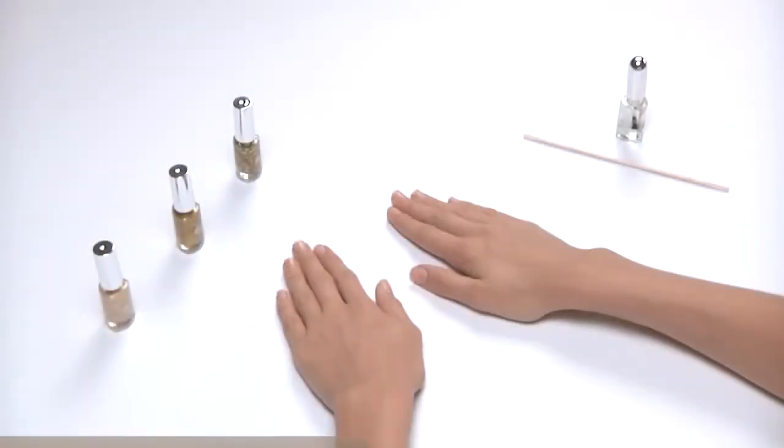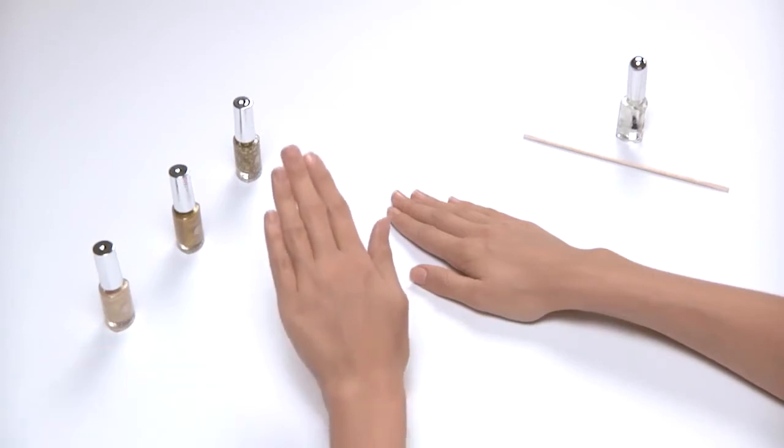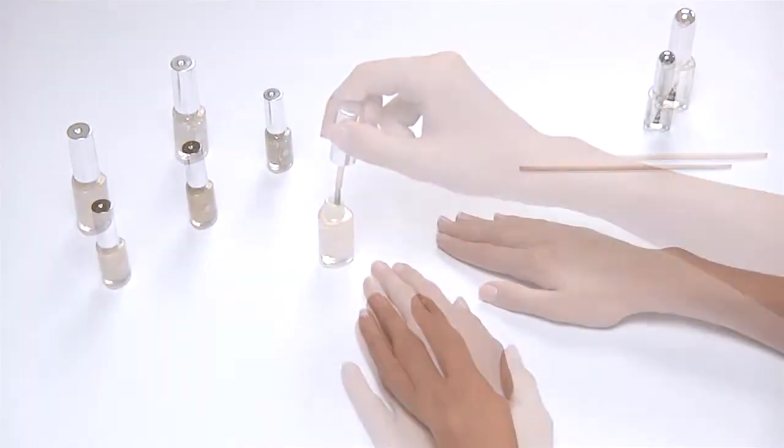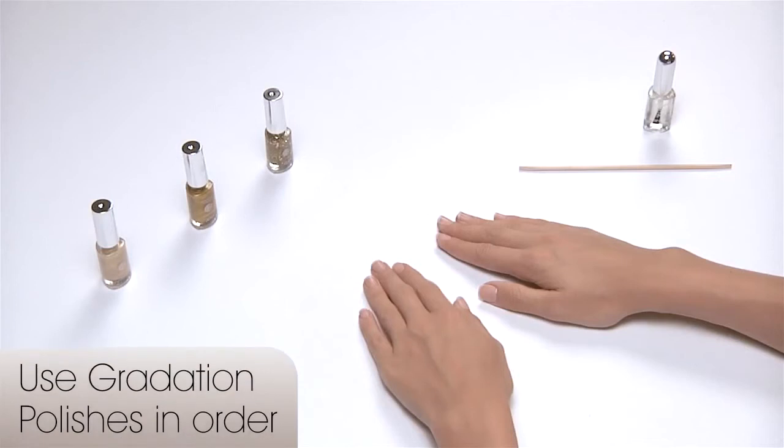Here are a few hints before you get started. It is helpful to begin on your dominant hand first. For example, if you are left-handed, apply polish to fingers of your left hand first. Apply brush strokes from the cuticle to the tip. Use gradation polishes in correct order.